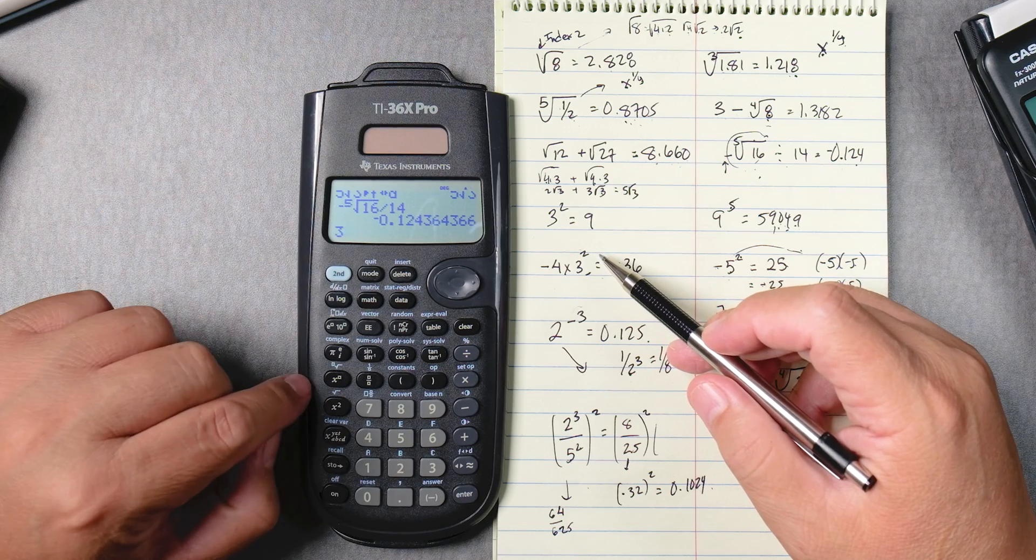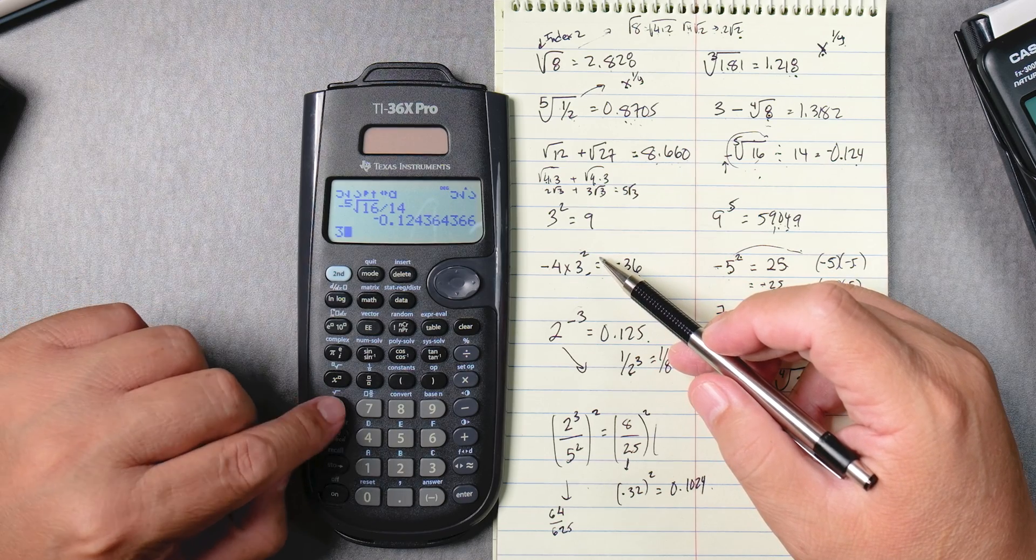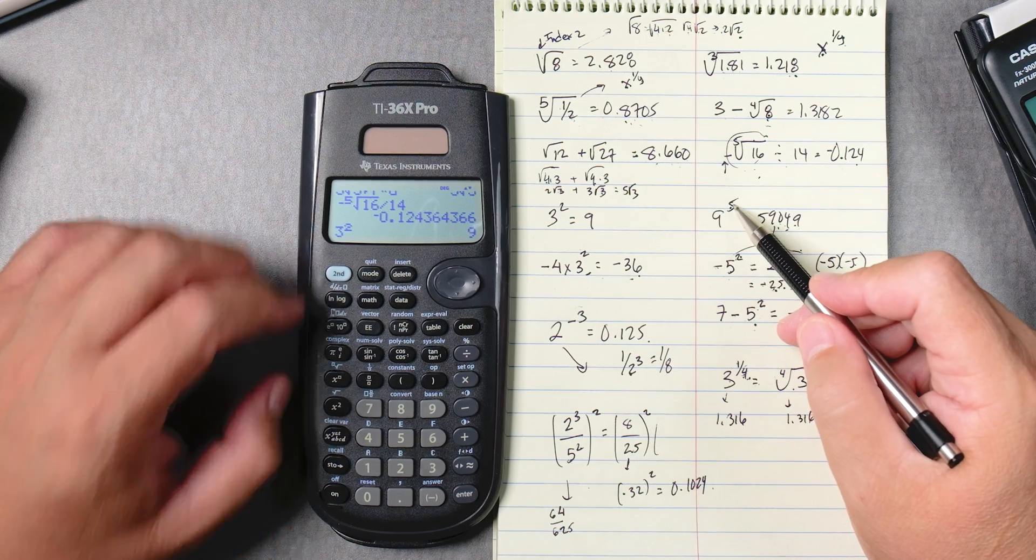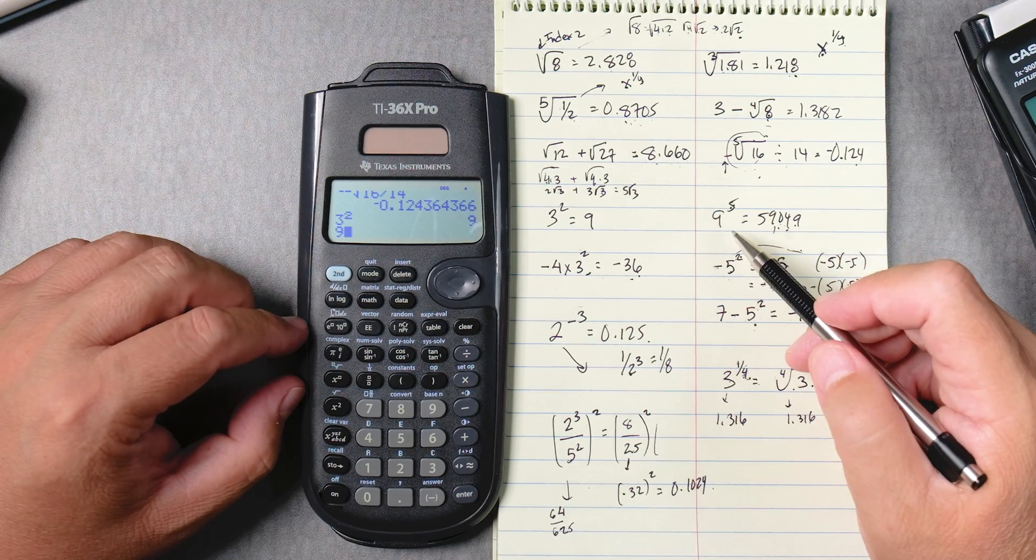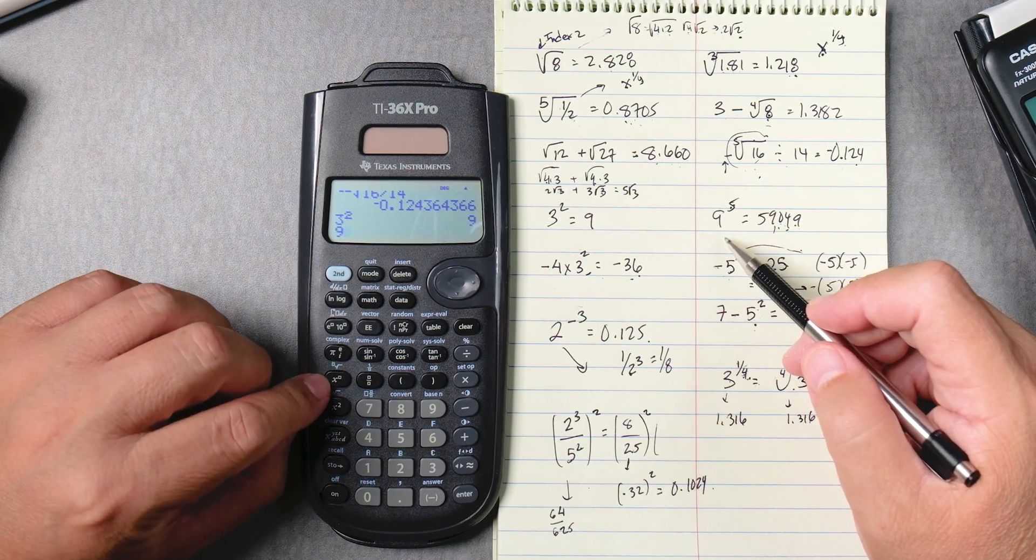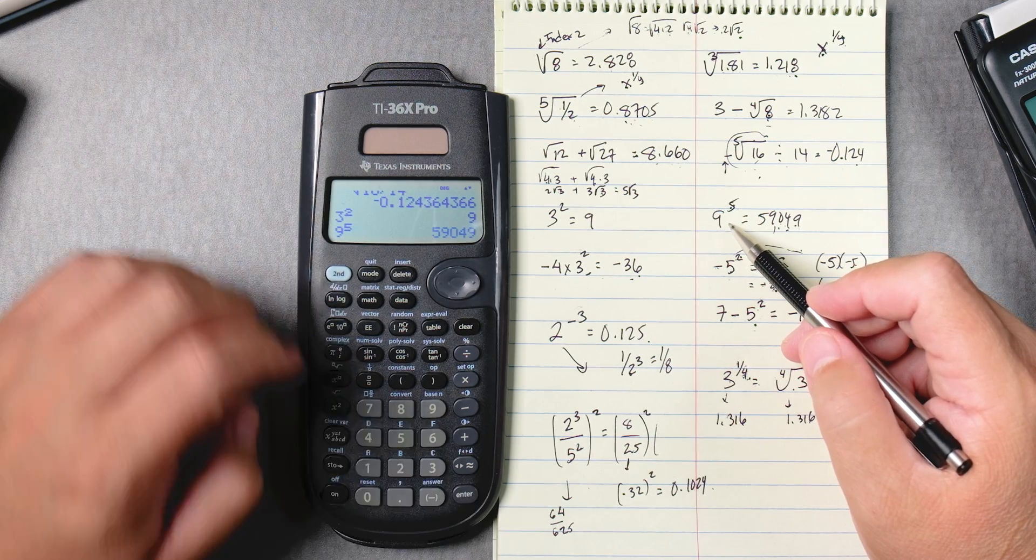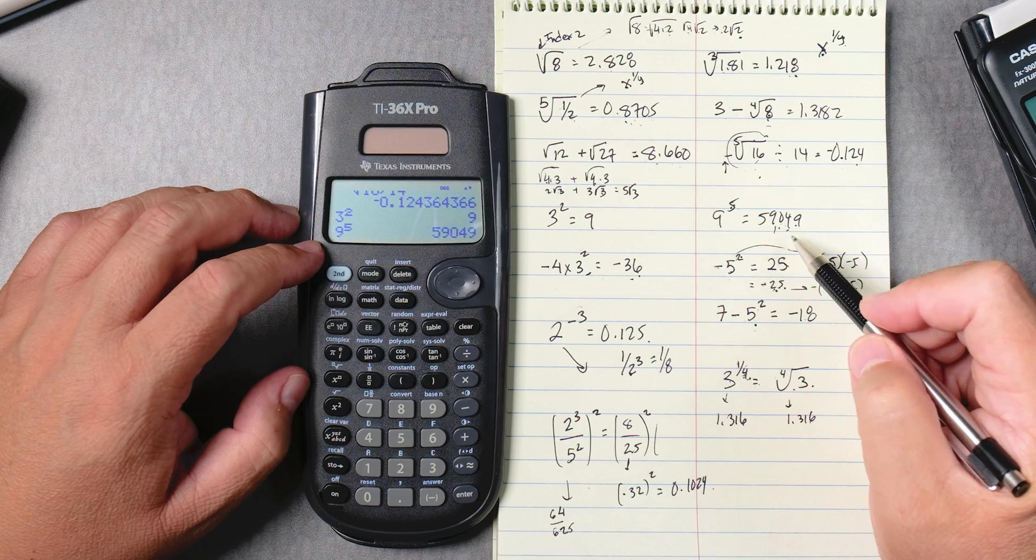3 squared, so 3 squared, here's the squared button, enter, pretty straightforward, 9. 9 to the 5th, 9, and then we're going to press x to the box to the 5th power, enter, and that's 59049.